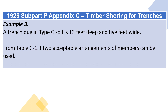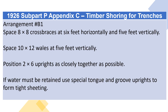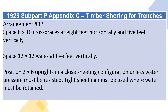Example 3: A trench dug in Type C soil is 13 feet deep and 5 feet wide. From Table C1.3, two acceptable arrangements of members can be used. Arrangement B1: space 8×8 crossbraces at 6 feet horizontally and 5 feet vertically. Space 10×12 whales at 5 feet vertically. Position 2×6 uprights as closely together as possible. If water must be retained, use special tongue and groove uprights to form tight sheeting. Arrangement B2: space 8×10 crossbraces at 8 feet horizontally and 5 feet vertically. Space 12×12 whales at 5 feet vertically. Position 2×6 uprights in a close sheeting configuration, unless water pressure must be resisted. Tight sheeting must be used where water must be retained.